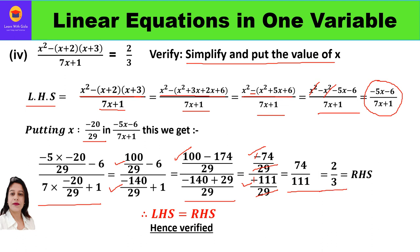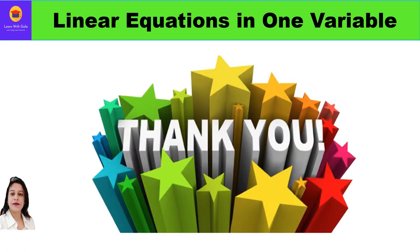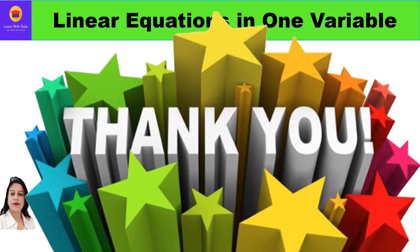The result is 2/3, which is the right hand side. So left hand side equals right hand side — verified that x equals minus 20/29. With this we come to the end of this video. Hope you have understood all these questions. Please do practice them, as that's the best way to understand. Please like and subscribe to the channel. Thank you everyone, have a great day ahead.